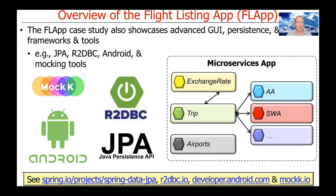The FLAP case study will also show off other cool things that, while not the key focus, we will definitely cover. We'll talk about advanced graphical user interfaces with our Android GUI, different persistence models including the classic JPA model and R2DBC — which is an asynchronous model that integrates seamlessly with reactive streams mechanisms from Project Reactor and WebFlux, making the entire application asynchronous. We'll also cover tools like mocking frameworks such as MockK for testing.